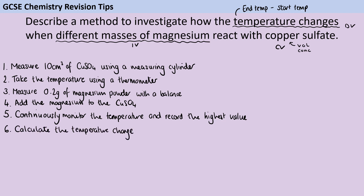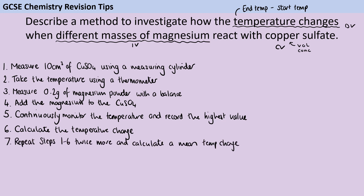Then we're going to calculate what the temperature change is. And then I'm going to repeat this whole thing a couple more times so that I have three data points — all for 0.2 grams of magnesium — and calculate a mean temperature change. Remember, there's basically never any credit given just for the idea of repeating; we need to talk about repeating and calculating a mean. We're taking the mean of the values for 0.2 grams of magnesium — not trying to work out one average for all the different masses — just being really precise about how big a temperature change 0.2 grams of magnesium causes.